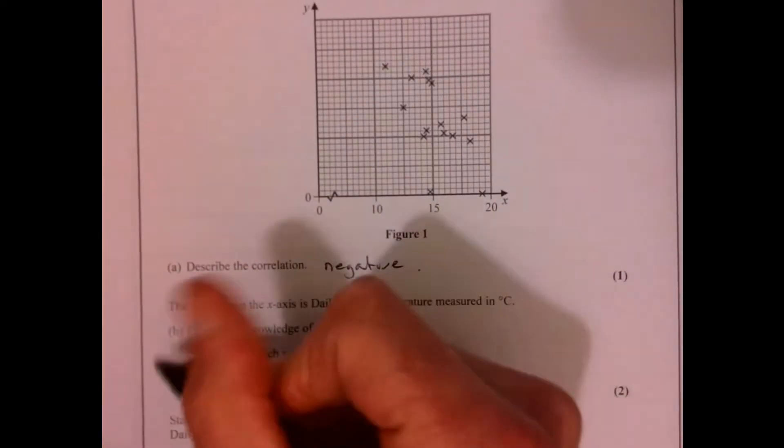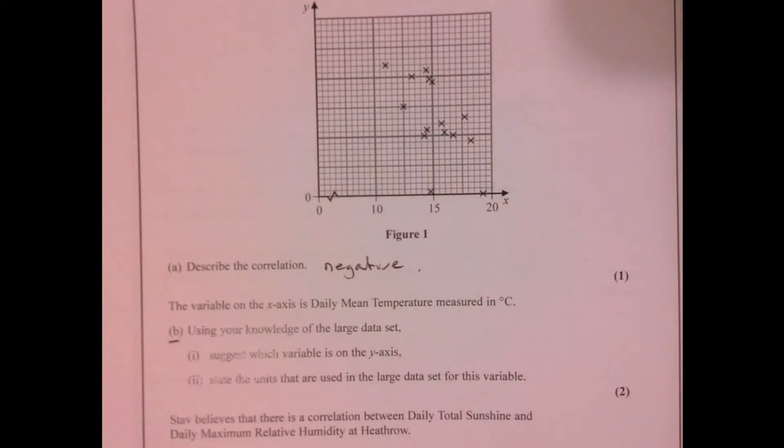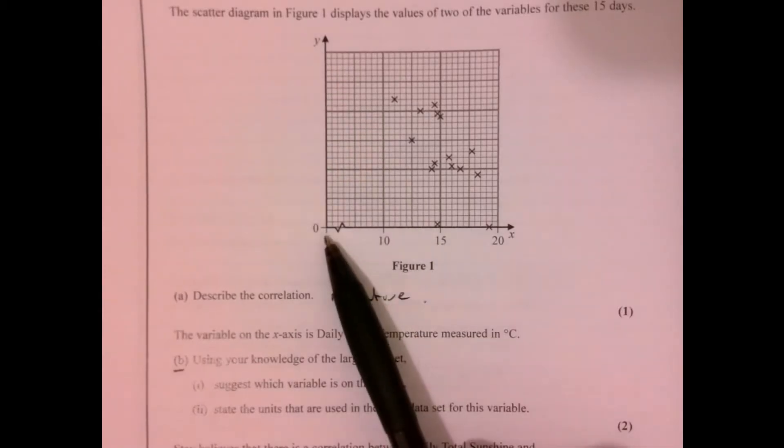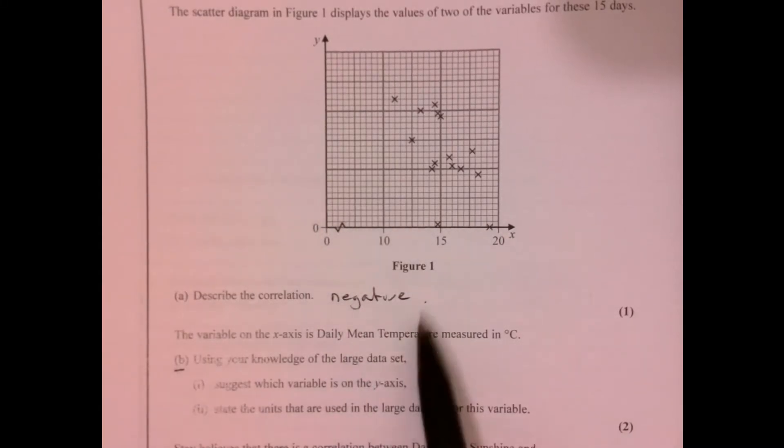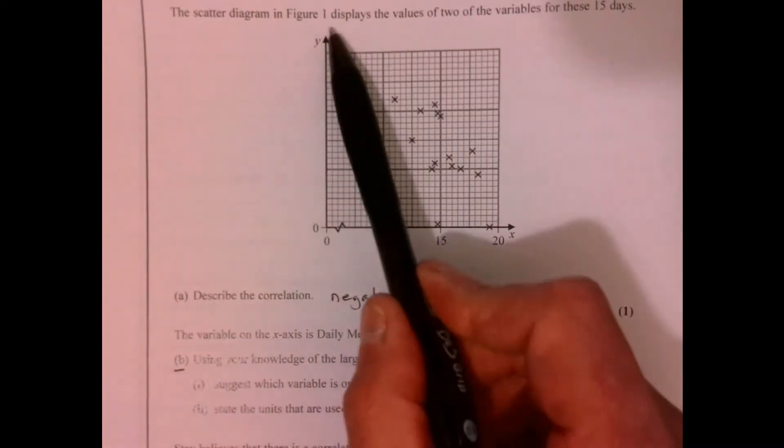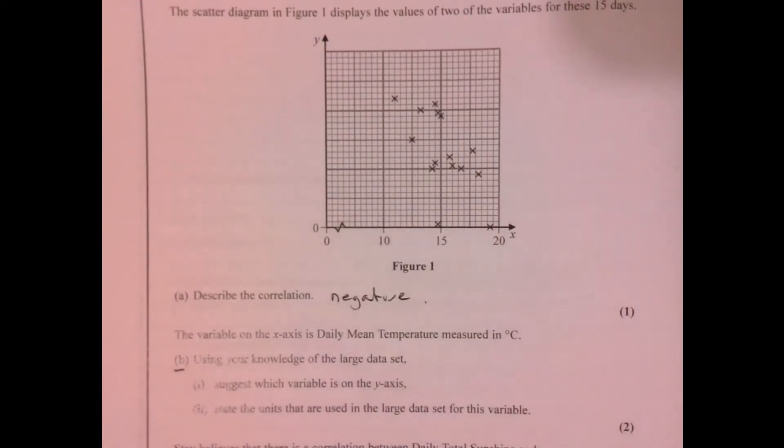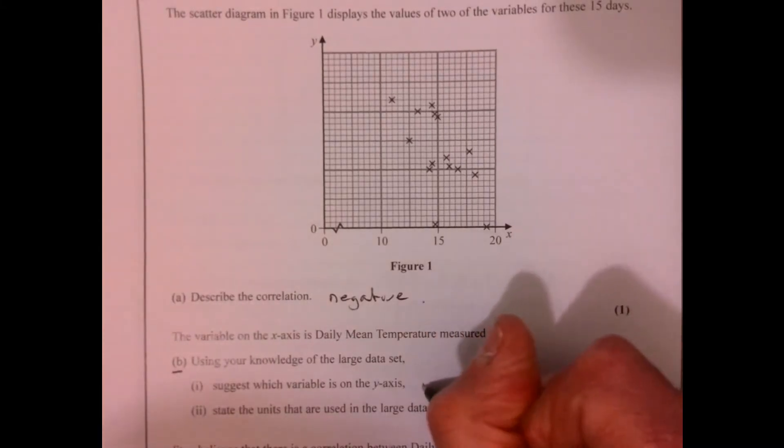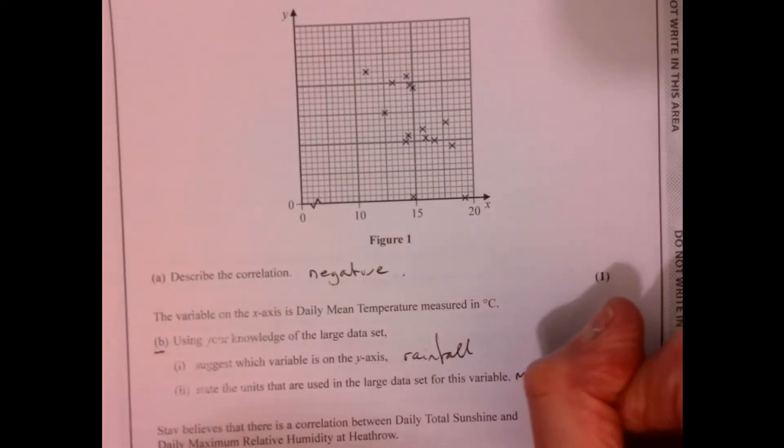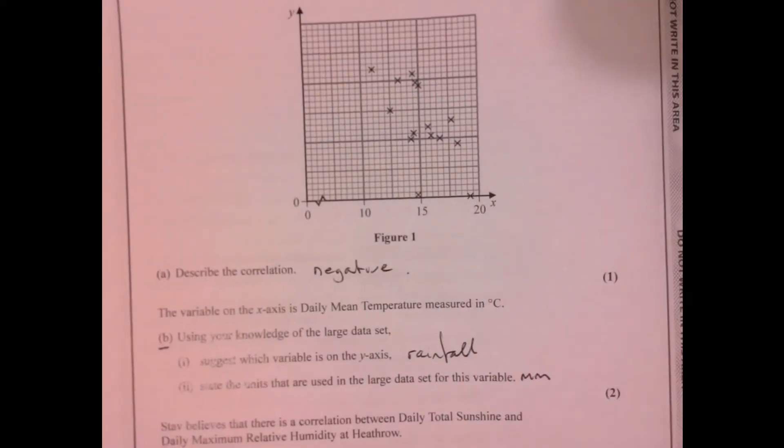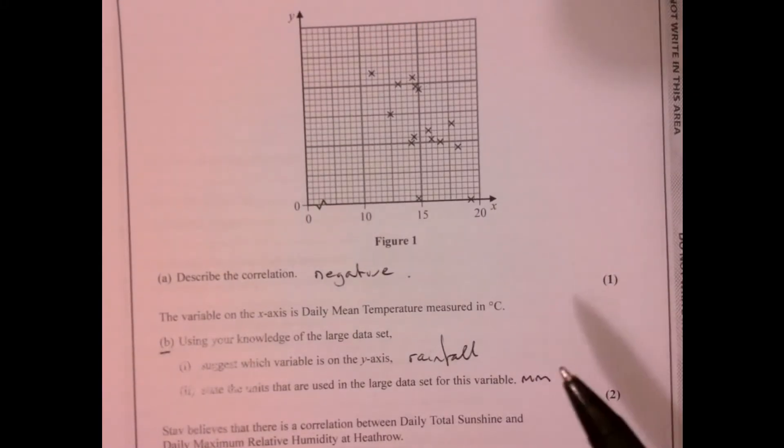On part B, we do need a bit of knowledge of the data set. It's difficult to get these two marks without it. Suggest which variable could the y-axis be. This we're told is our daily mean temperature, so it's quite hot, and this one's getting quite small. I think the most likely one is rainfall. It's probably the easiest to think about because rainfall is measured in millimeters. You need a bit of knowledge to know what variables there are.